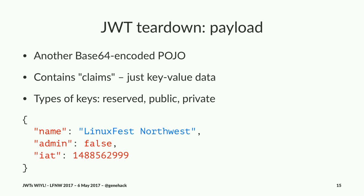All of the reserved keys tend to be very short — IAT is a reserved key, standing for 'issued at.' Whatever is in the payload gets stringified, so you want keys to be as short as possible. Here's an example payload: we have a 'name' key set to 'LinuxFest Northwest,' an 'admin' Boolean, and a Unix timestamp for when this token was issued.